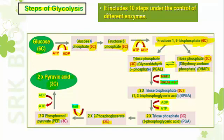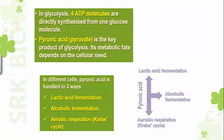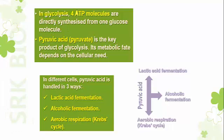In total, 4 ATP molecules are directly synthesized during glycolysis, and 2 NADH molecules are synthesized. However, 2 ATP molecules are consumed during glycolysis. So in glycolysis, 4 ATP molecules are generated directly from one glucose molecule.